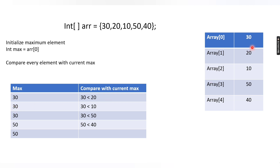We again compare 30 with the next array element, which is 10: is 30 less than 10? No — so 30 is still the maximum and we proceed. Next element is 50: is 30 less than 50? Yes — this condition becomes true, so we update max to 50.